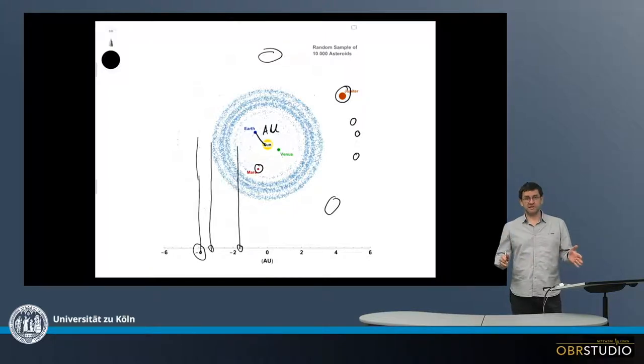So most of the asteroids are in the asteroid belt. However, they can be found throughout the entire solar system.